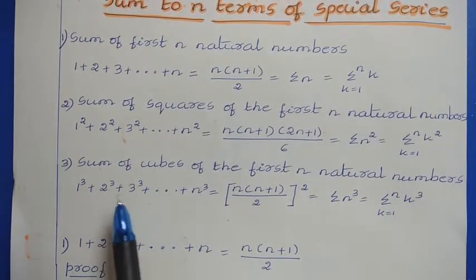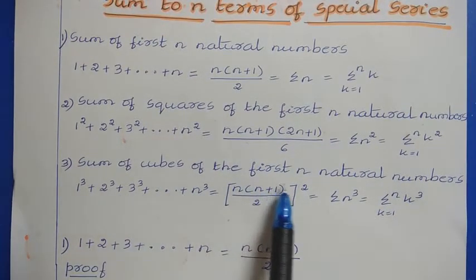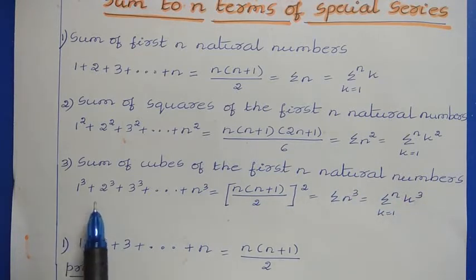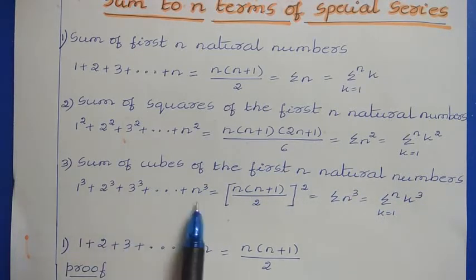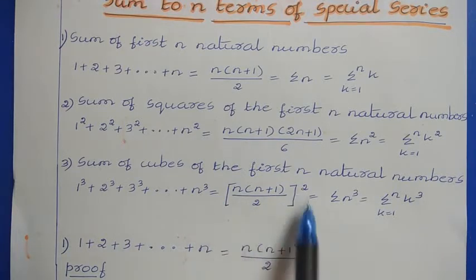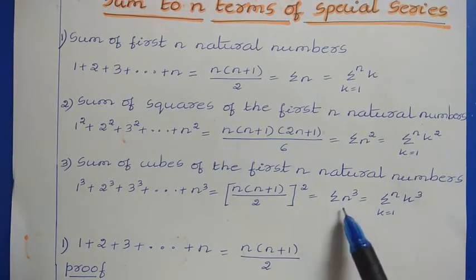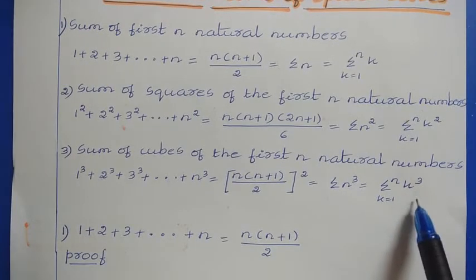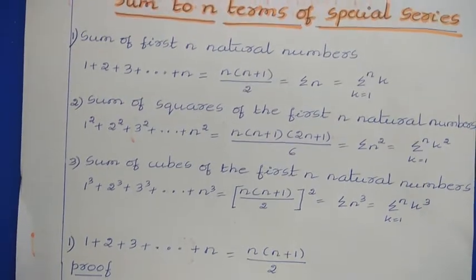Next we have the third special series, sum of cubes of the first n natural numbers, that we can denote as 1 cube plus 2 cube plus 3 cube and so on up to plus n cube. That is equal to n into n plus 1 divided by 2, whole square. In sigma notation, sigma n cube or sigma k equals 1 to n of k cube. These are the three special series.